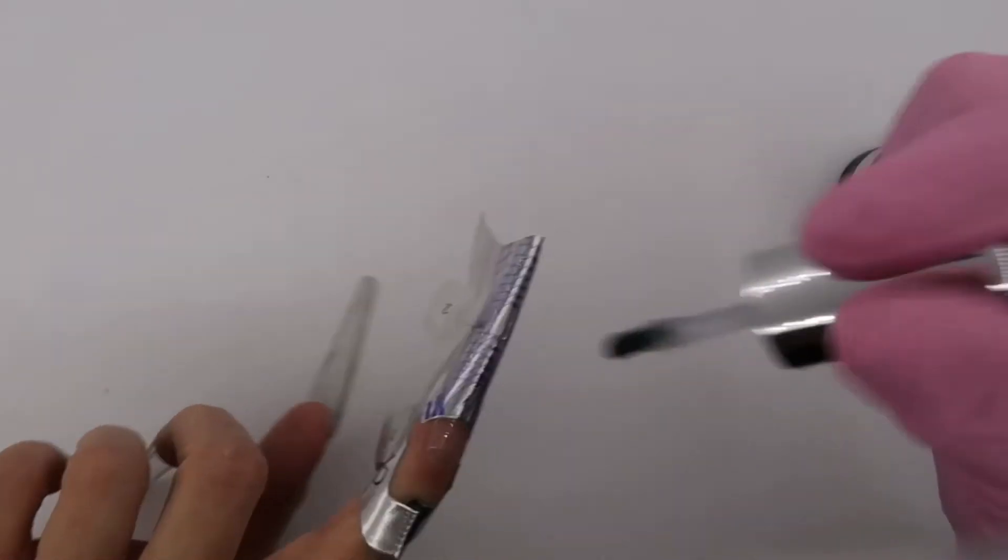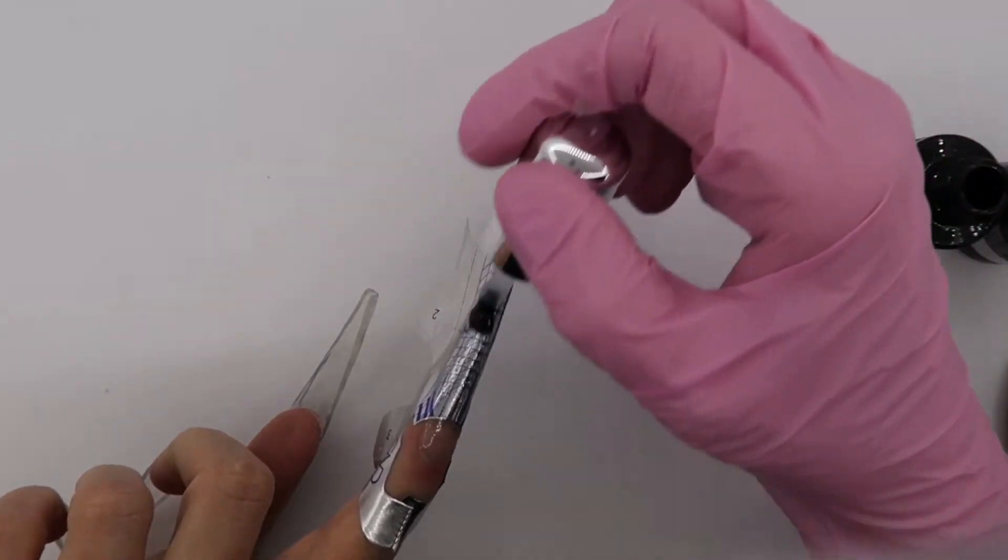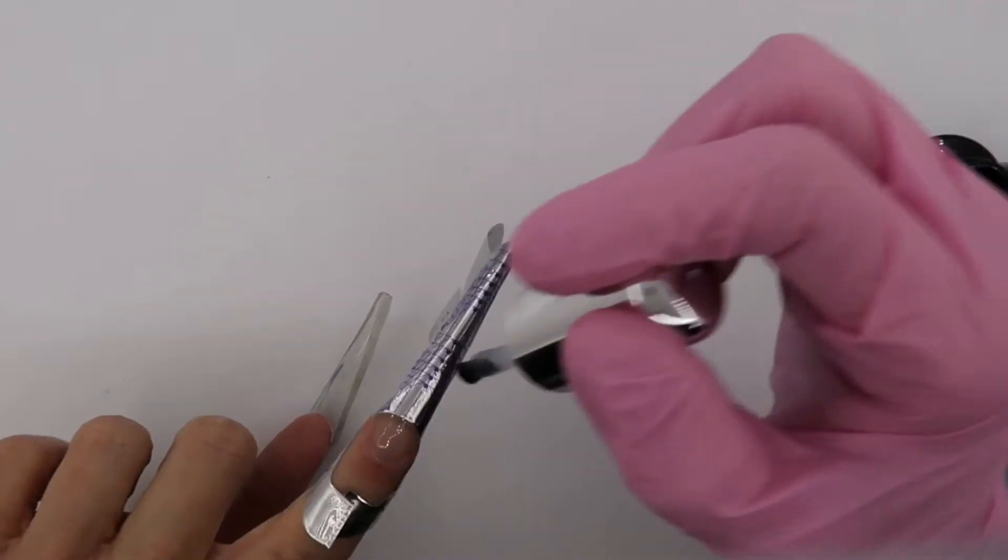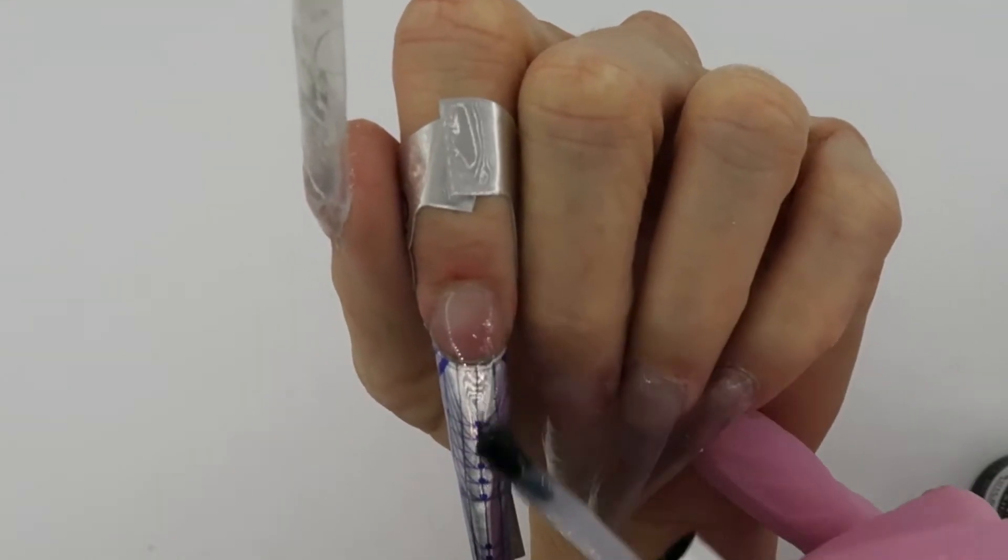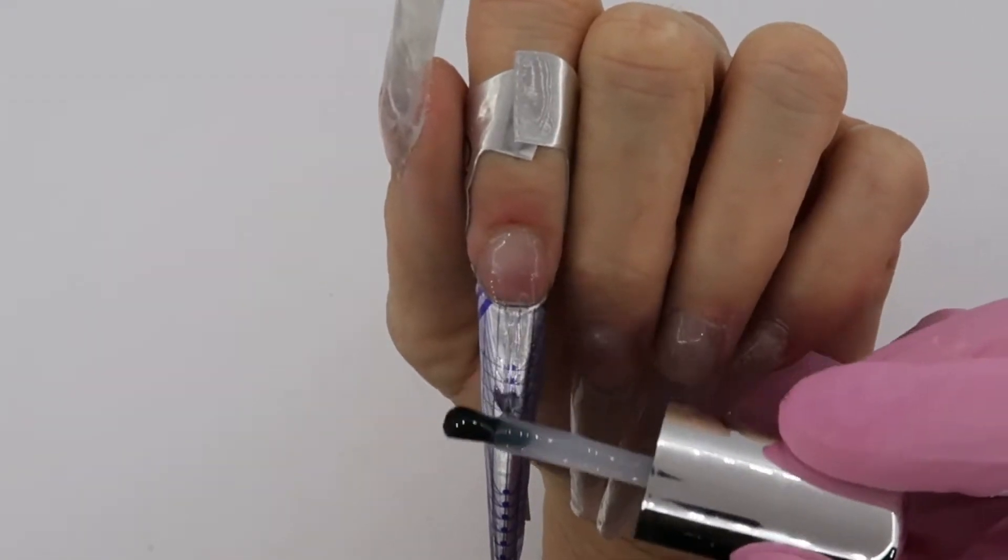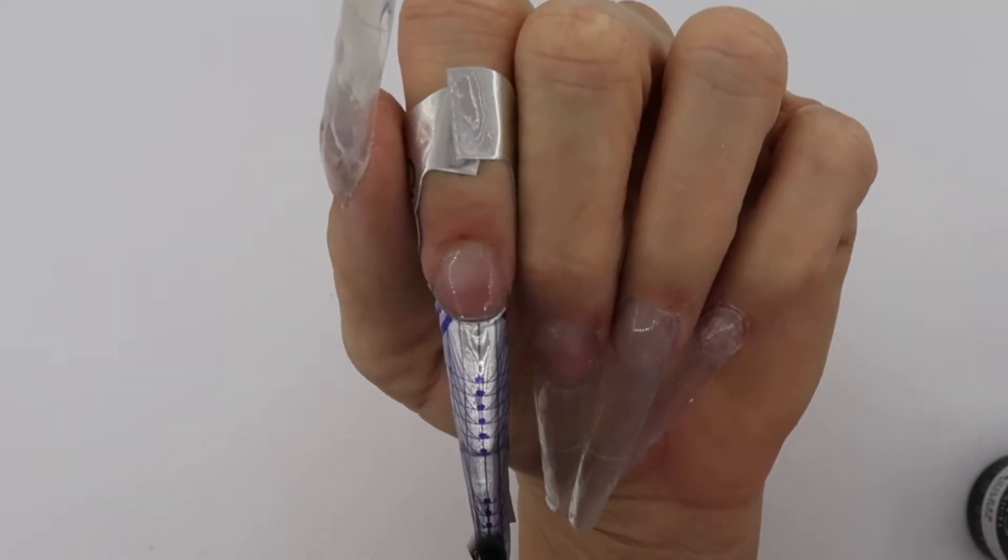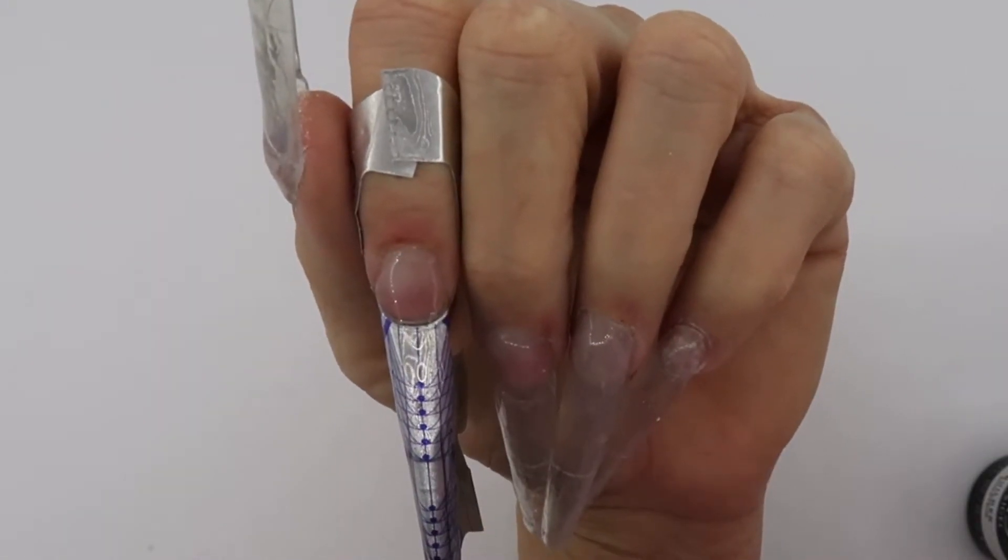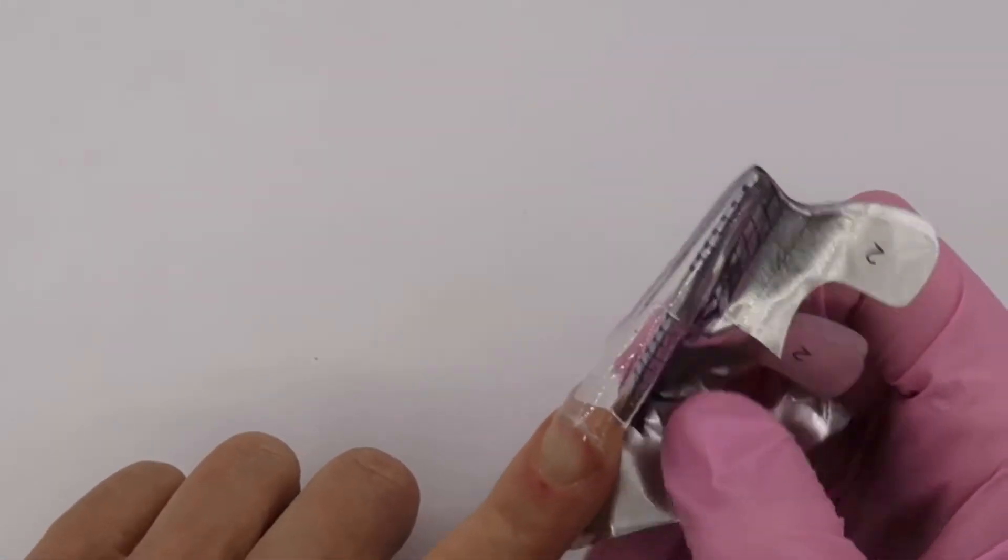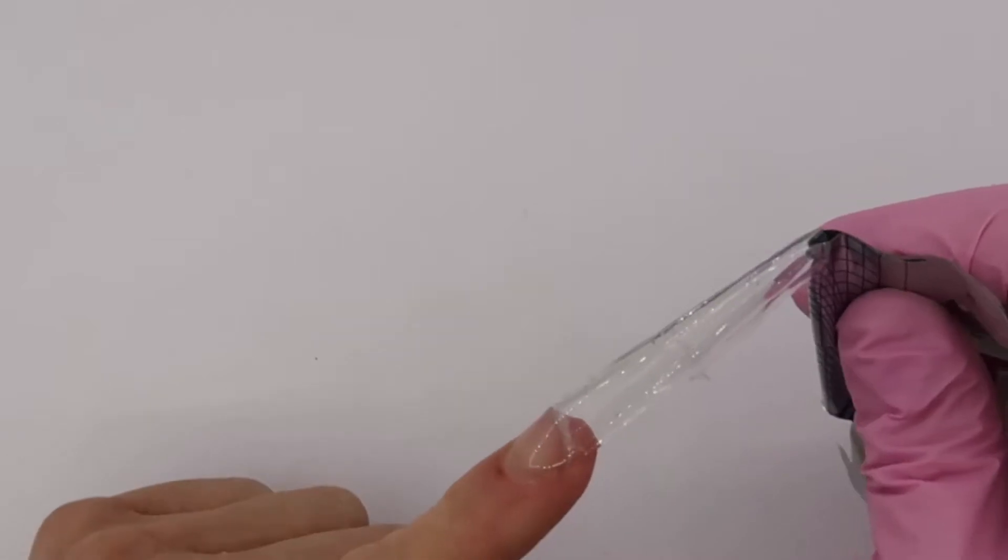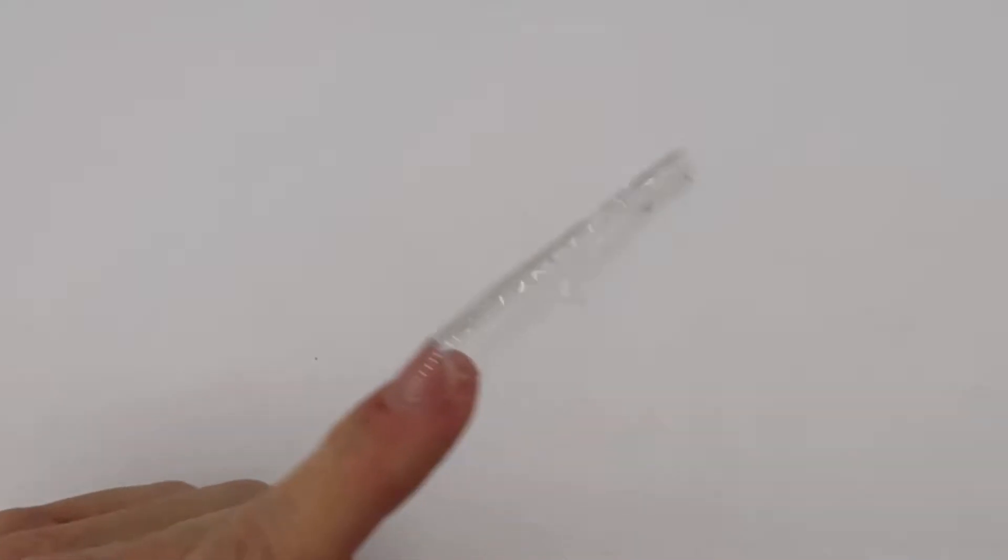I love that you can customize your C-curves, lengths, and shapes when sculpting versus tips. Then with CND's Plexigel Builder, build up an apex. Because it is an extended nail, we want to extend the apex. So satisfying!